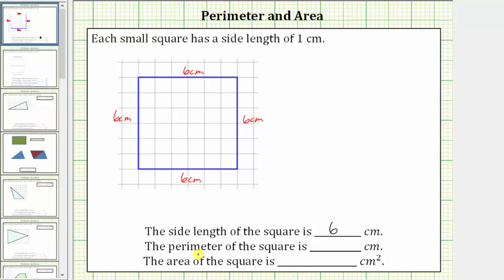Next we were asked to determine the perimeter of the square. The perimeter of any polygon is the length around the outside of the polygon, and therefore the perimeter of the square is six centimeters plus six centimeters plus six centimeters plus six centimeters, which gives a perimeter of 24 centimeters.